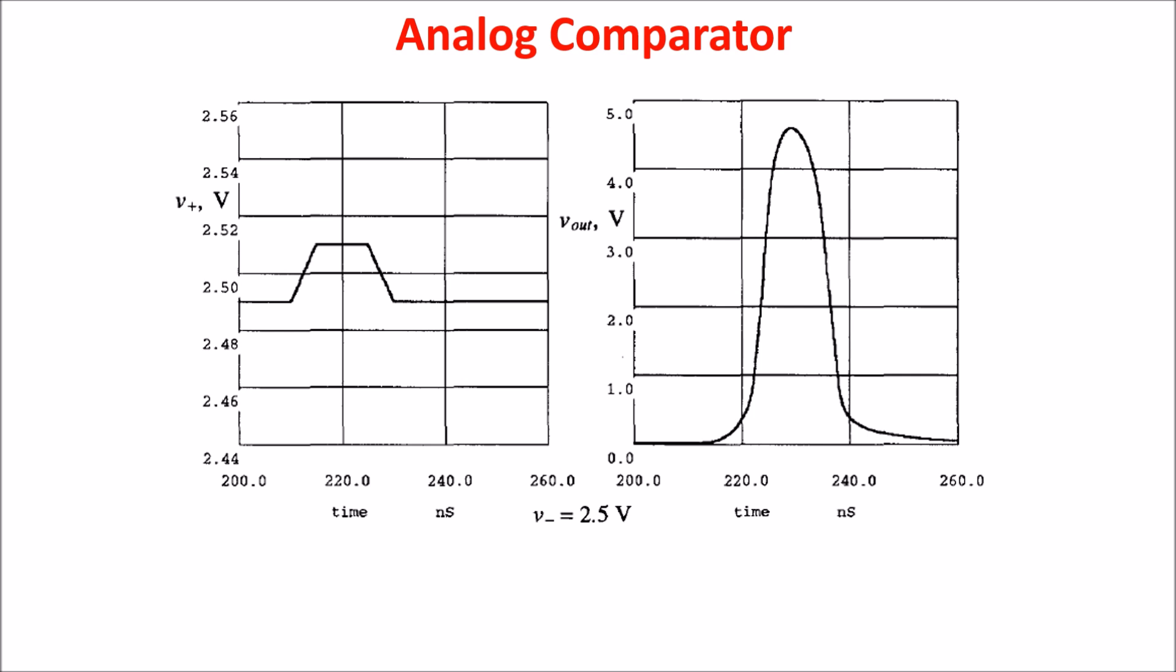The simulated transient response of the comparator is shown here. We consider V minus equal 2.5 volt DC and we give the V plus input a 10 nanosecond wide pulse with an amplitude varying from 2.49 to 2.51 volts. This is termed a narrow pulse with a 10 millivolt overdrive. We are driving the plus input of the comparator 10 millivolt over the negative input. On the right you see the response and if the pulse amplitude or width is reduced much beyond this level, the comparator does not make a full transition. You see also that the delay of the comparator is approximately 10 nanosecond and this should be compared with the delay of an op-amp used as a comparator which may be several hundred nanoseconds.